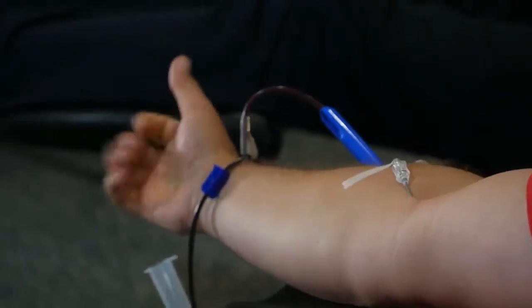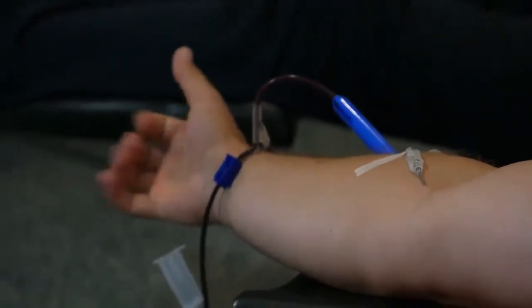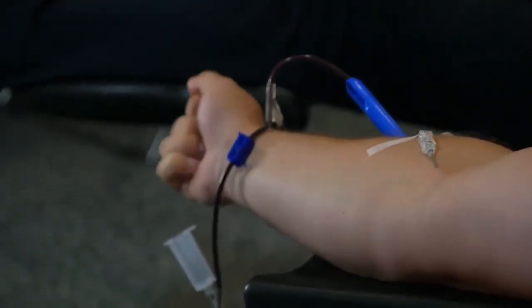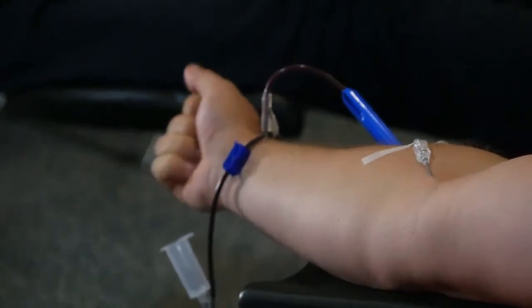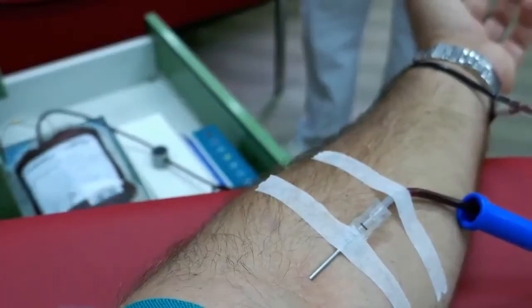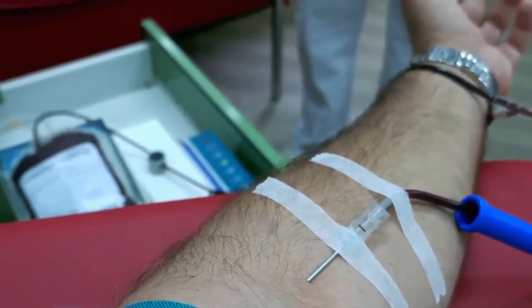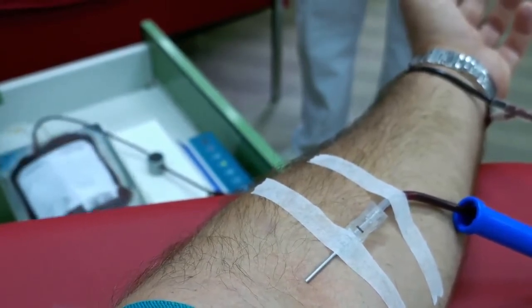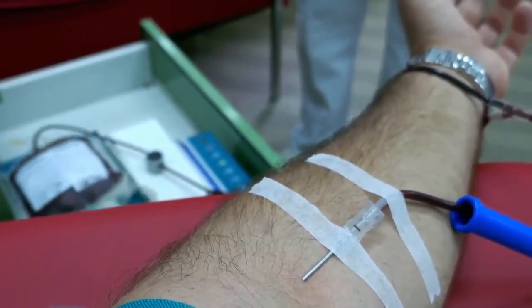B positive - a person with this rare form, 8.5%, can donate blood only to people with B positive or AB positive. B negative - a person with this rare form, 1.5%, may donate blood to anyone with B or blood type AB.